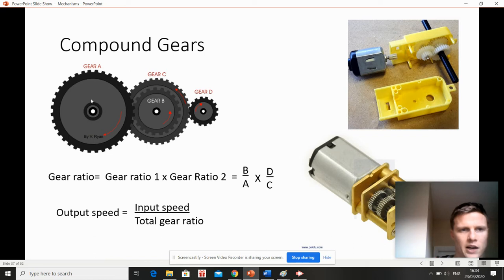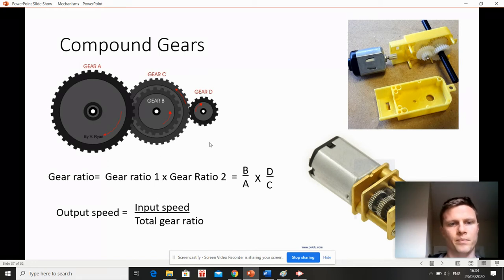...is you find the gear ratio of gear A and gear B - that'll be gear B over gear A, that's the driven over the driver. Then you multiply it by the gear ratio of gear C and gear D as a separate set of gears - that's D over C - and that will give you your total gear ratio.